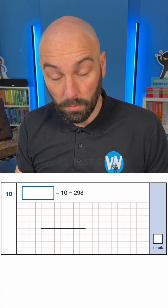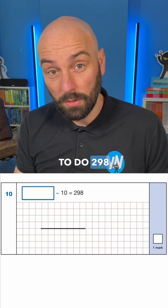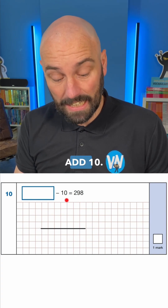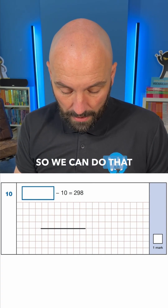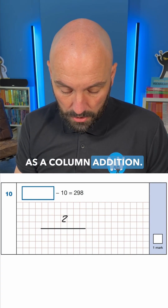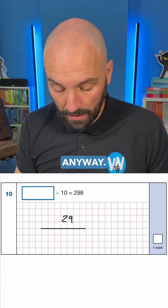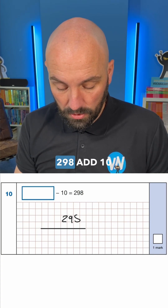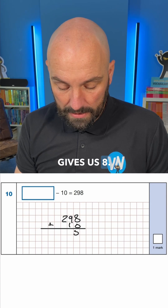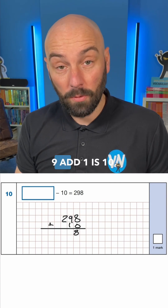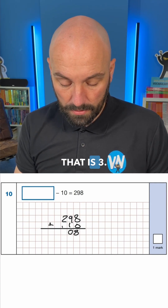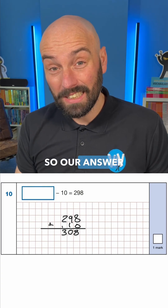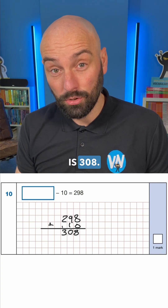That's very, very simple. We're just going to do 298 add 10. We can do that as a column addition. 298 add 10 gives us 8. 9 add 1 is 10, so we're going to carry, and that is 3. So our answer is 308.